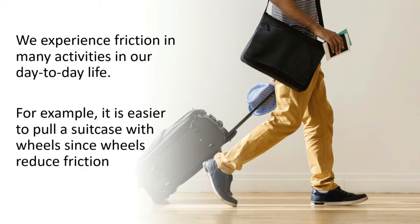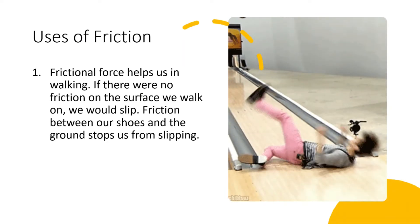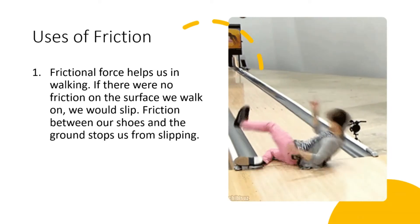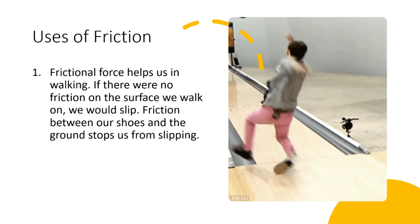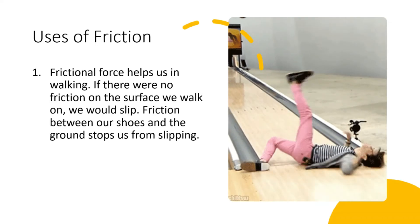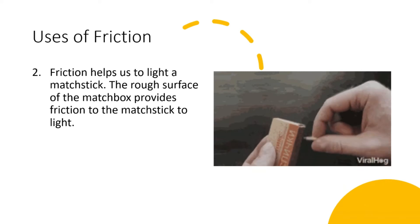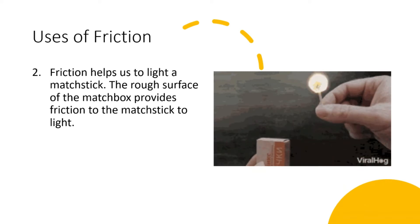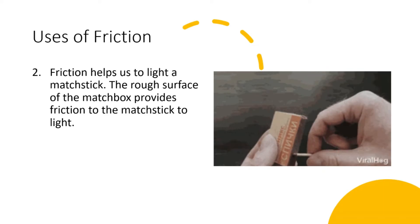Let us now look at the uses of friction. Frictional force helps us in walking. If there were no friction on the surface we walk on, we would slip. Friction between our shoes and the ground stops us from slipping. Friction helps us to light a matchstick. The rough surface of the matchbox provides friction to the matchsticks to light.